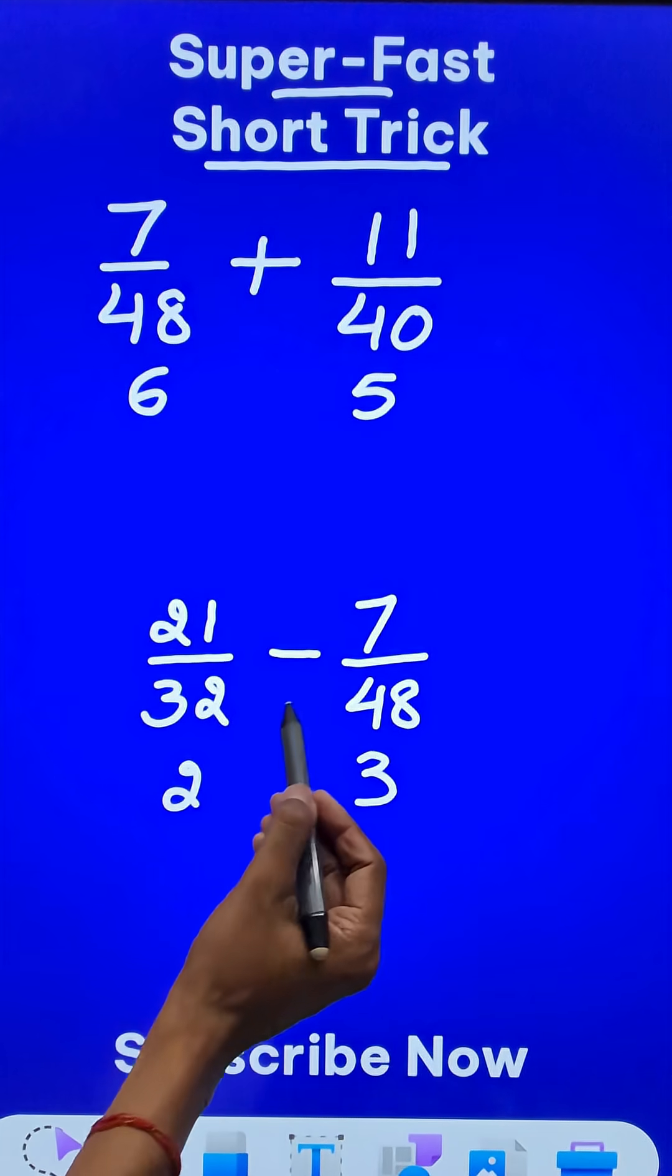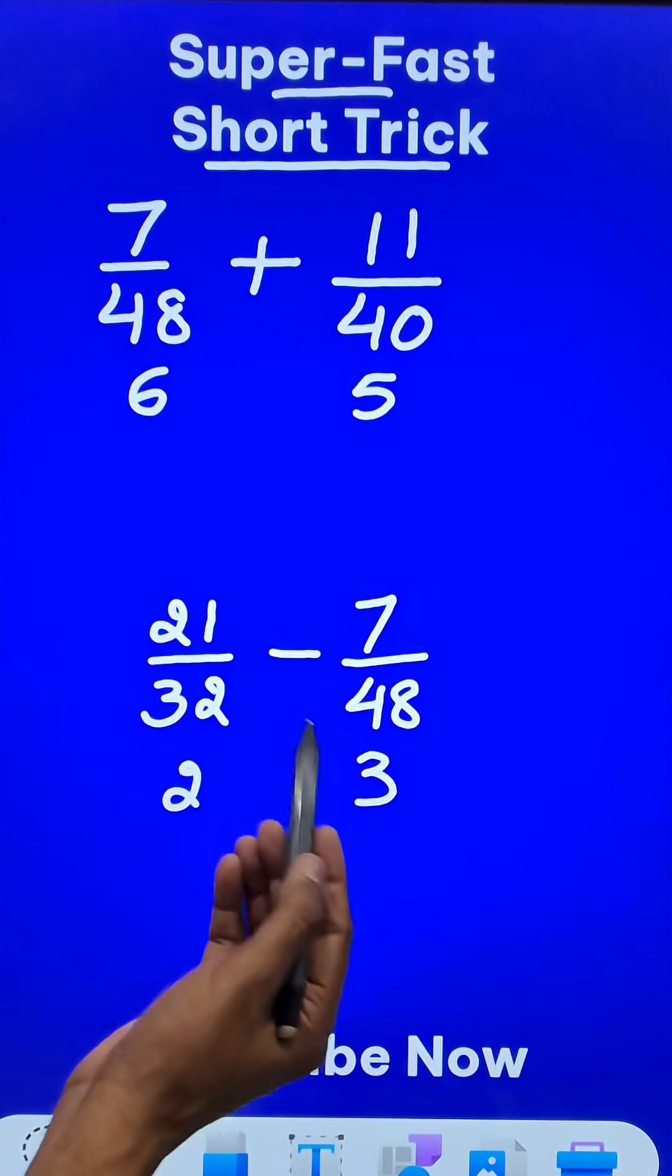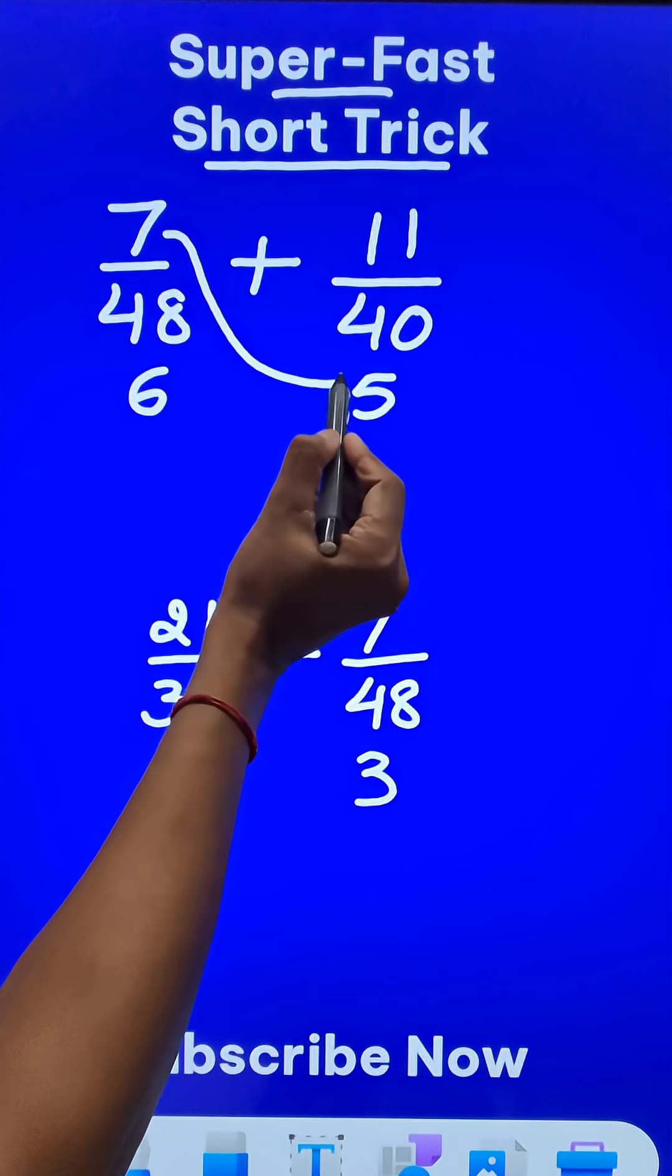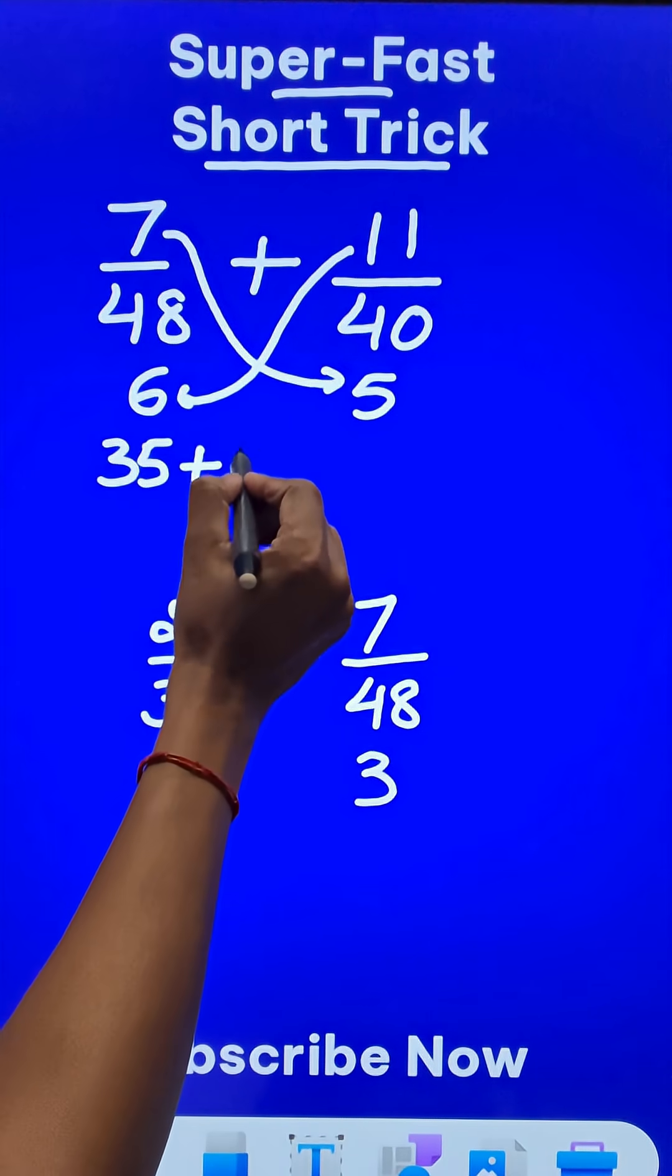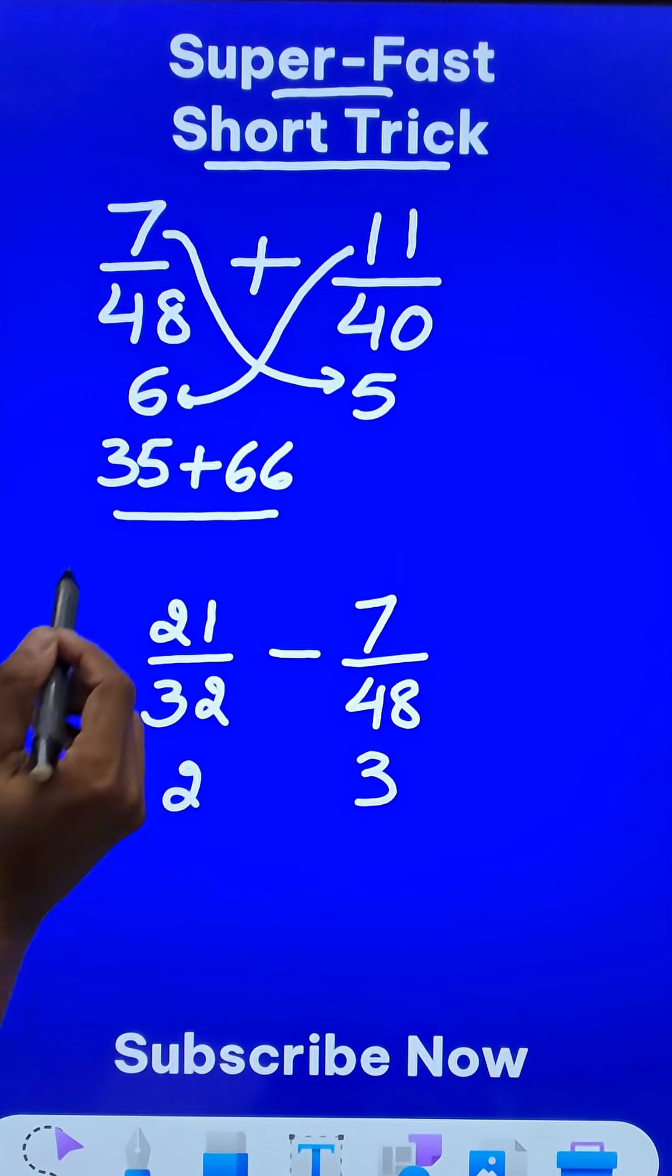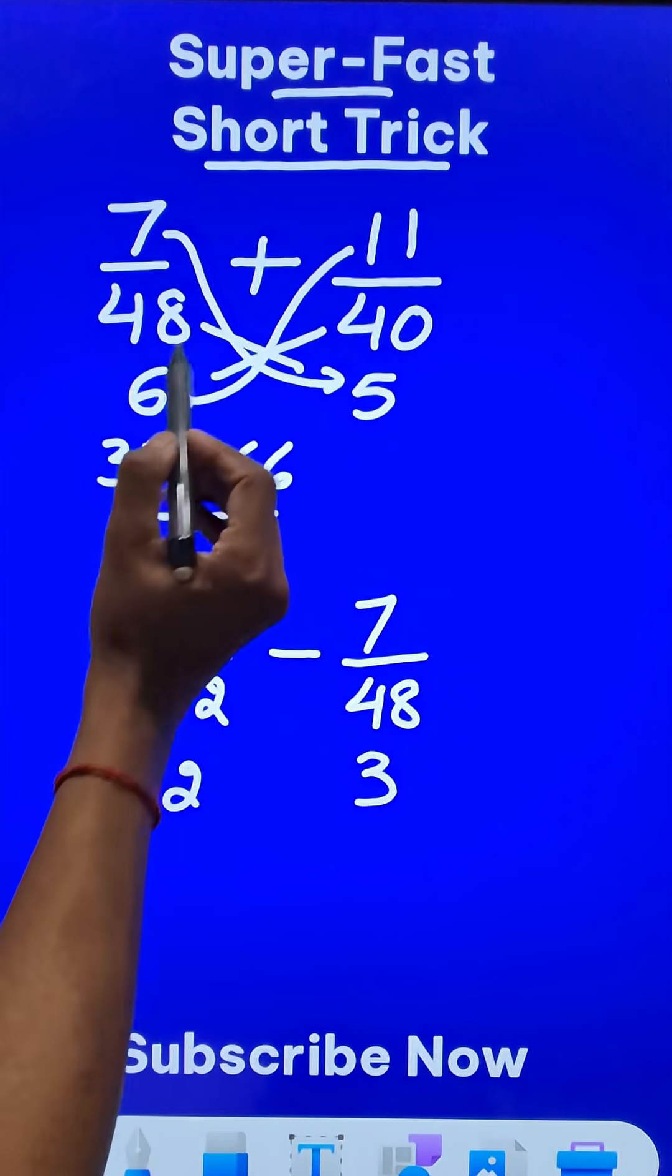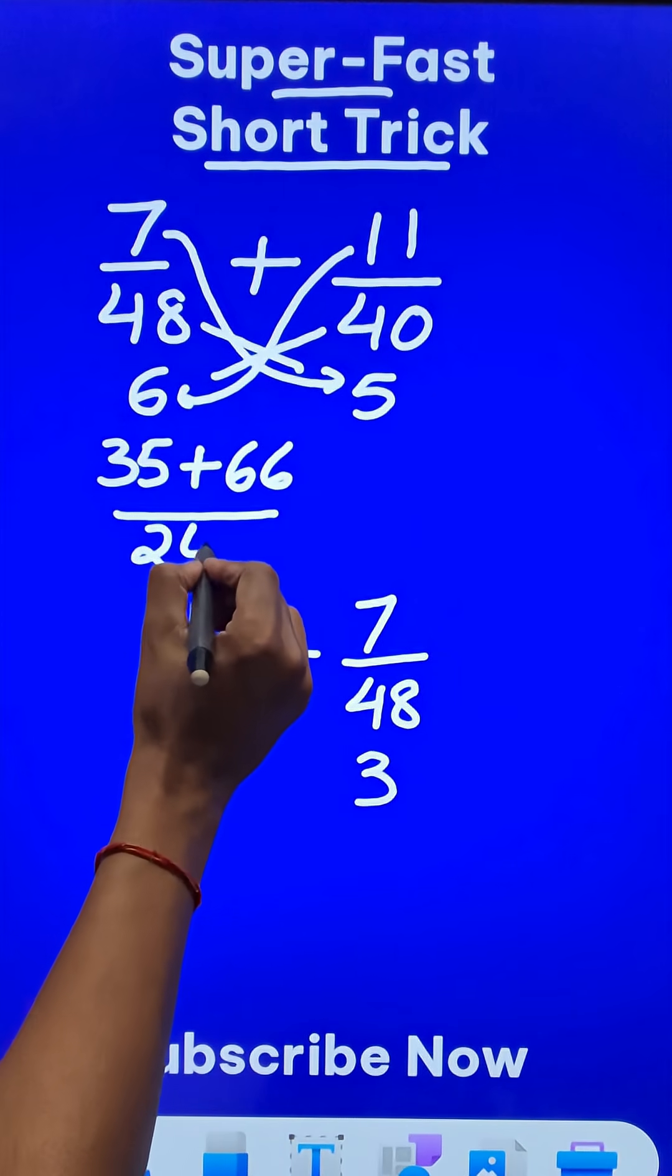So after you have eliminated the highest common factor from the denominators, things become so easy. 7 times 5 is 35 plus 11 times 6 is 66. And in the denominator, you can do 40 times 6 or 48 times 5. Both of them are going to give you 240.